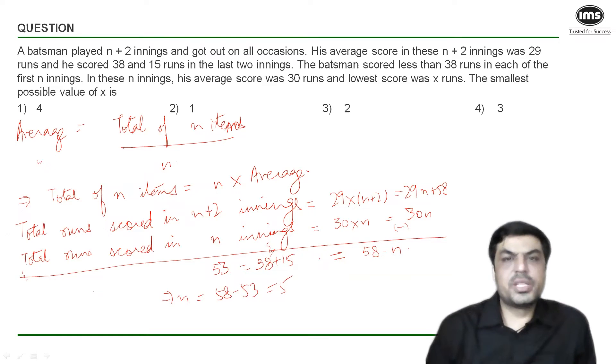So we have got n is equal to 5, which means first he played 5 innings scoring runs at an average of 30, then he scored 38 and 15 in the next two innings and his average dropped to 29. We have to find his minimum possible score in one of the earlier 5 innings given that he always scored less than 38.